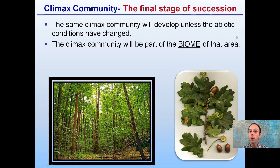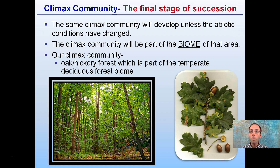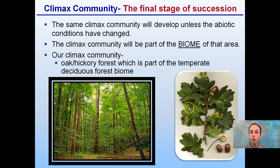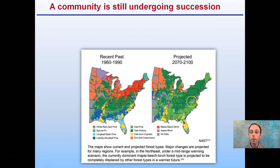Climax community is the final stage of succession. The same climax community will develop unless abiotic conditions have changed, and it will be part of the biome of the area. In Connecticut, the climax community is the Old Hickory Forest, which is part of the temperate deciduous forest biome. This is where old forests end up with a high presence of oak and hickory trees. The community is still undergoing succession, as seen in data from the 1960s and 1990s and projected forward, with oak-hickory forests increasing across the area.